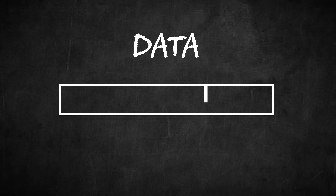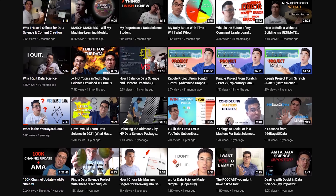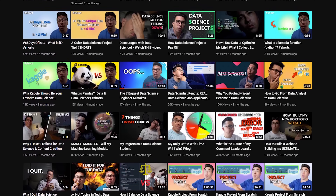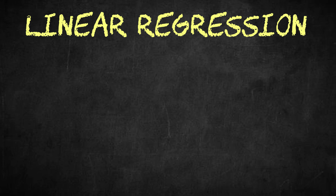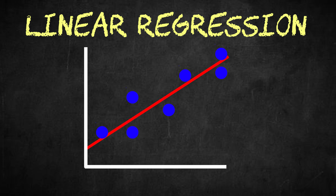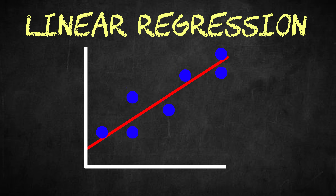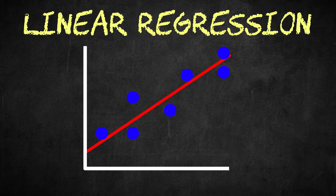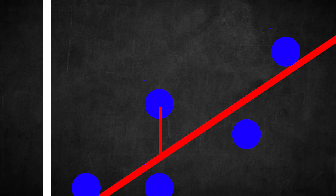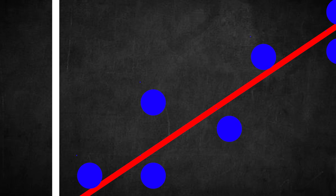Whenever a data scientist builds a model, they'll split their data into a train and a test set. They'll use their train data to teach the model, and then they'll see how their model performs predicting outcomes on the test set. For example, if we want to build a model that predicts someone's YouTube views based on how many videos they've made, we'd use a machine learning technique called linear regression. Training the model is just fitting a line to these data points — we change the slope and the intercept to reduce the error, or reduce how wrong we were with each estimation. That is how our model learns from data. If our model does a really good job predicting test values, we might consider it ready to apply to new data.